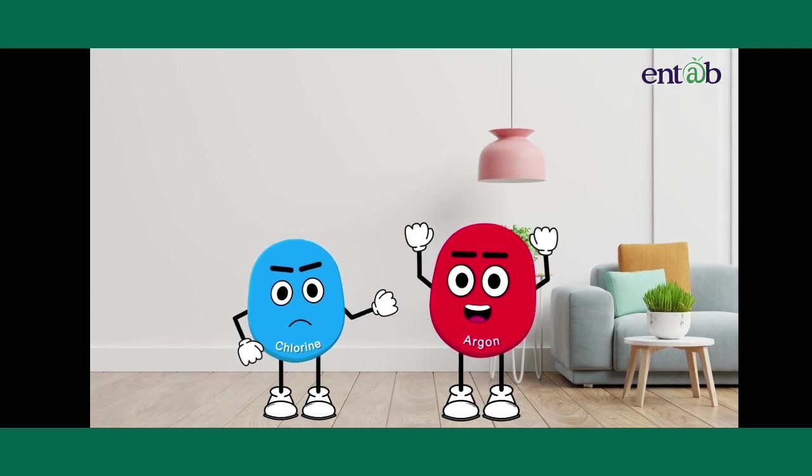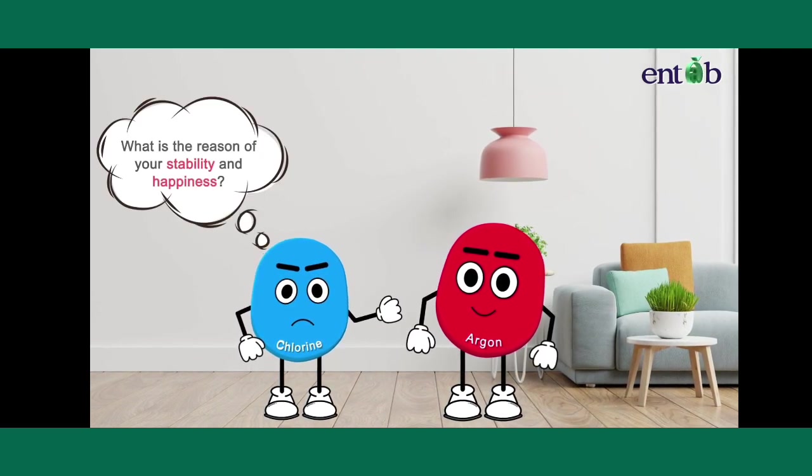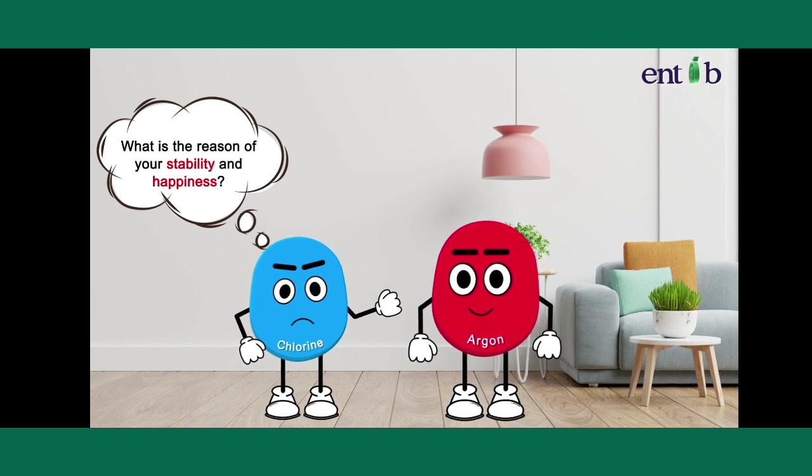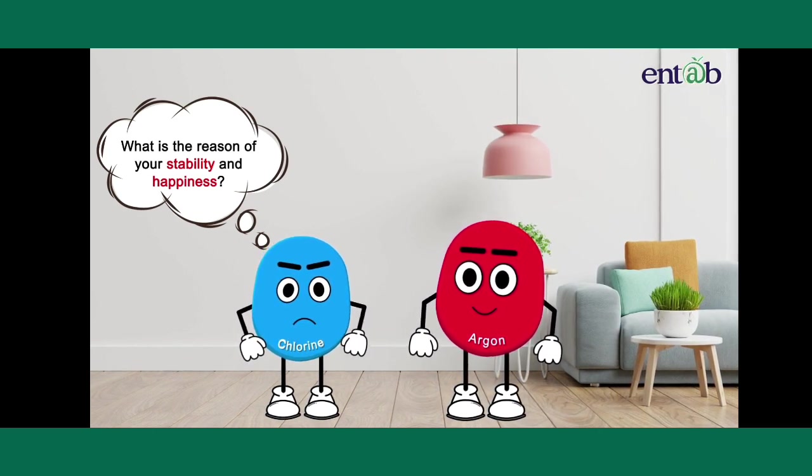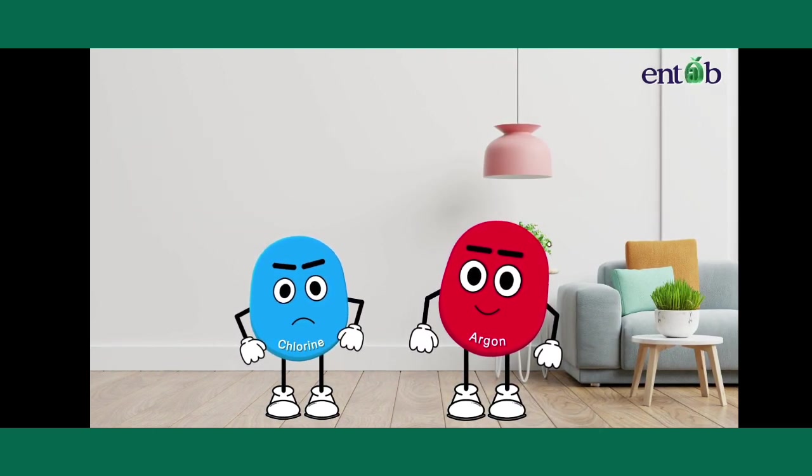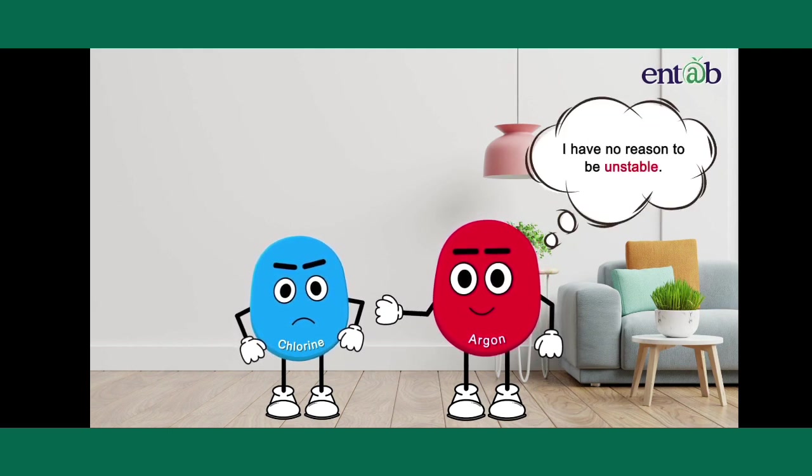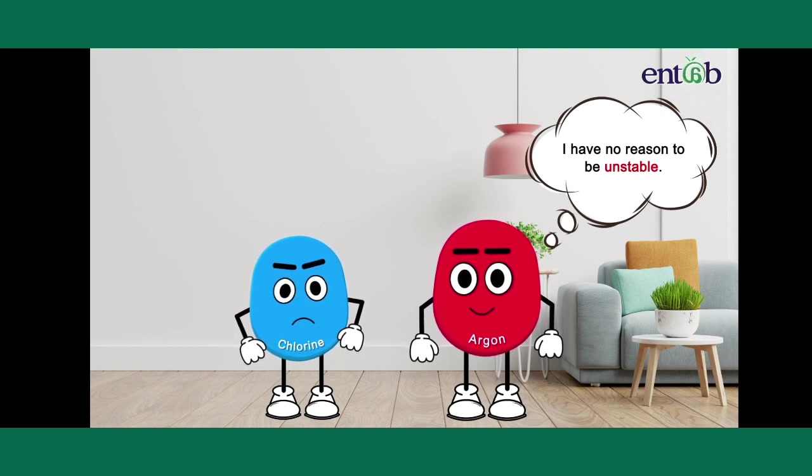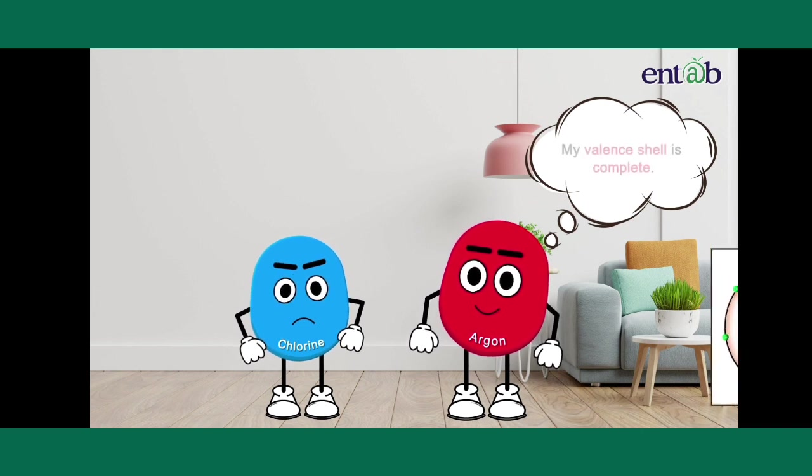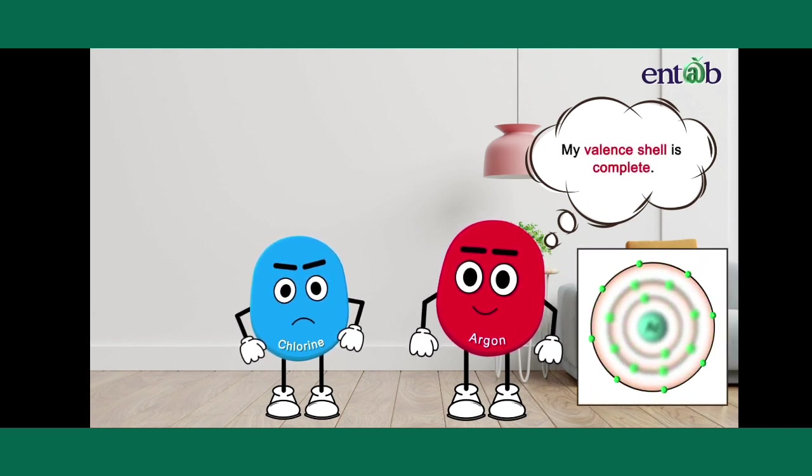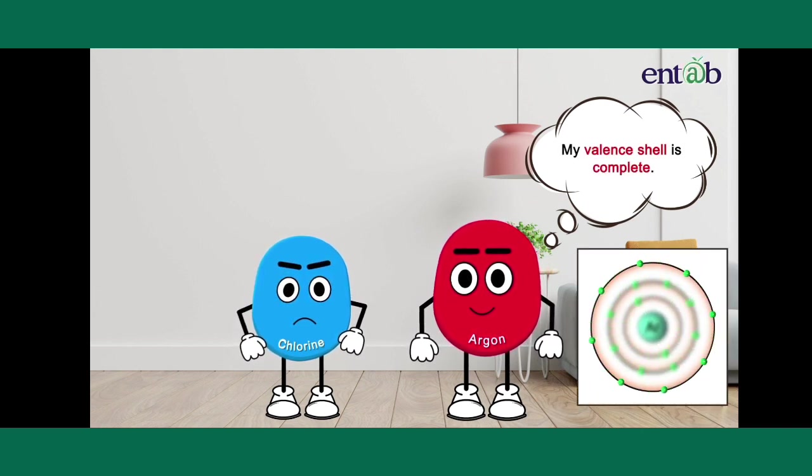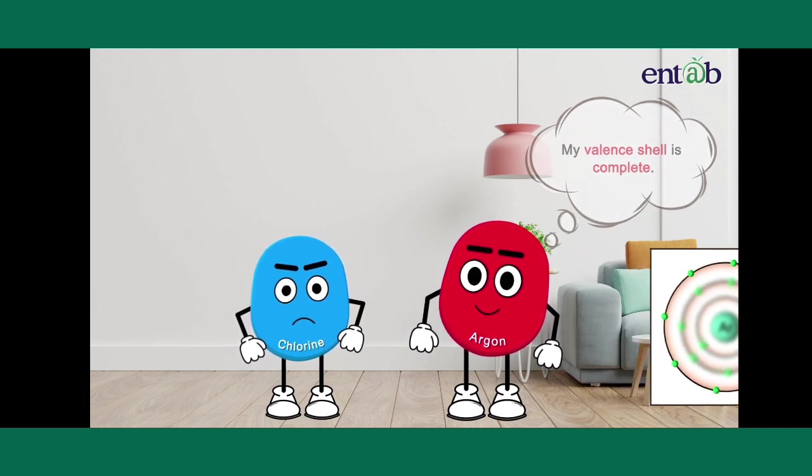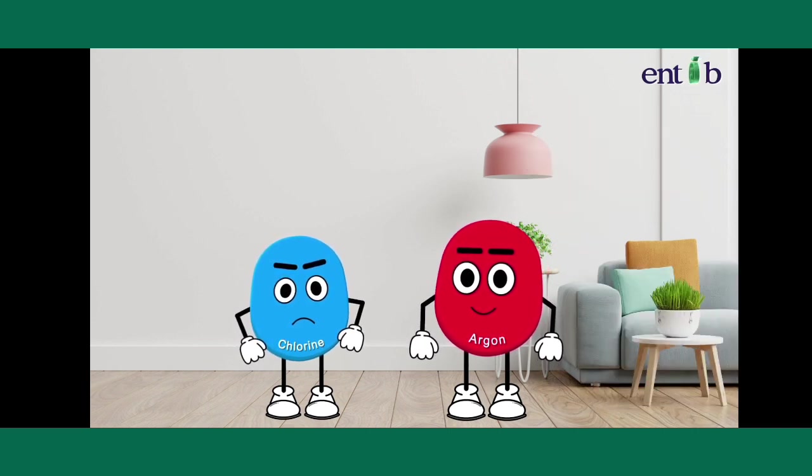Chlorine asked him the secret of its stability and happiness. Argon told him that it has no reason to be unstable or to react with various substances as its valence shell is completely filled with electrons. It had a perfectly balanced life.